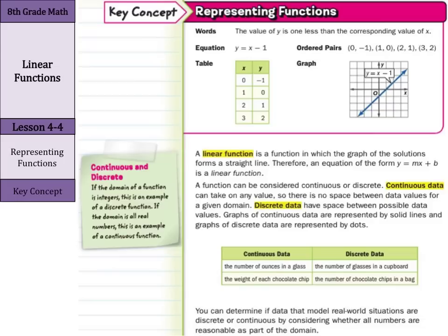You're going to have one glass, or two glasses, or three glasses. The number of chocolate chips in a bag, I mean, if there's 100 chocolate chips in a bag and you eat 10 of them, there's 90 left. You have a dot for each chocolate chip. You're not going to have room in between them.